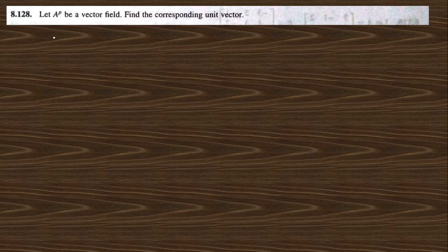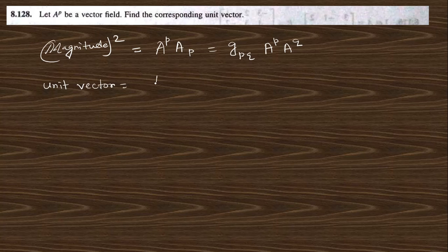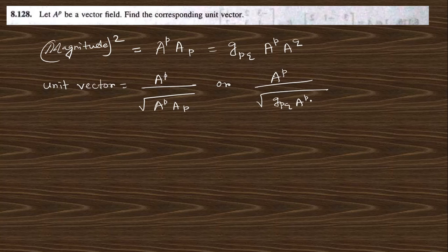Next question: let a_p be a vector field. Find the corresponding unit vector. The square of the magnitude is a_p times a^p, or you can write this as g^pq a_p times a_q. So the unit vector will be a^p divided by the square root of g^pq a_p a_q.